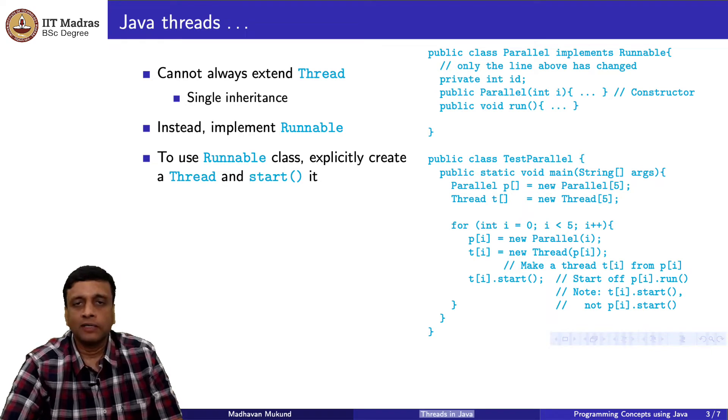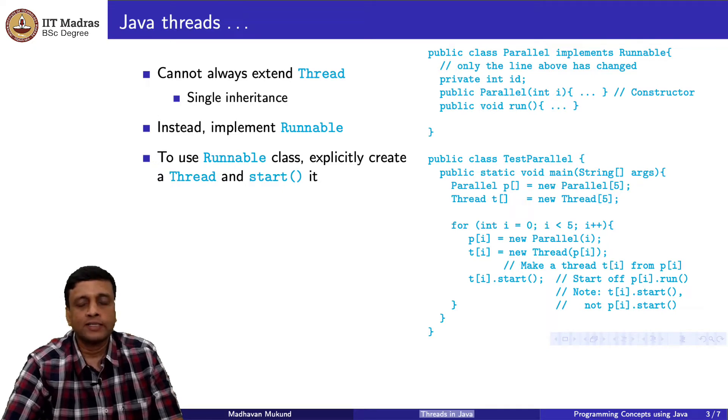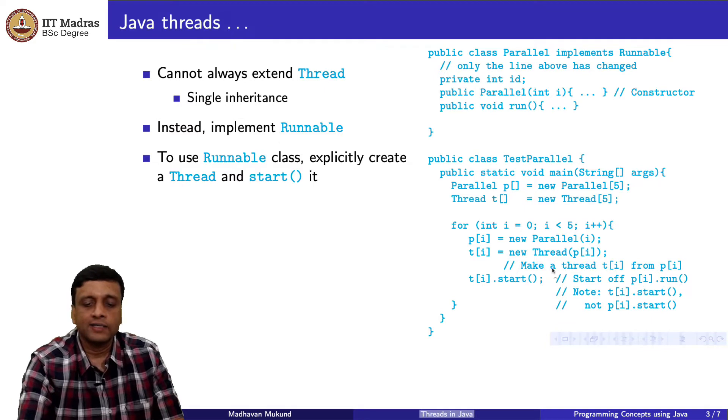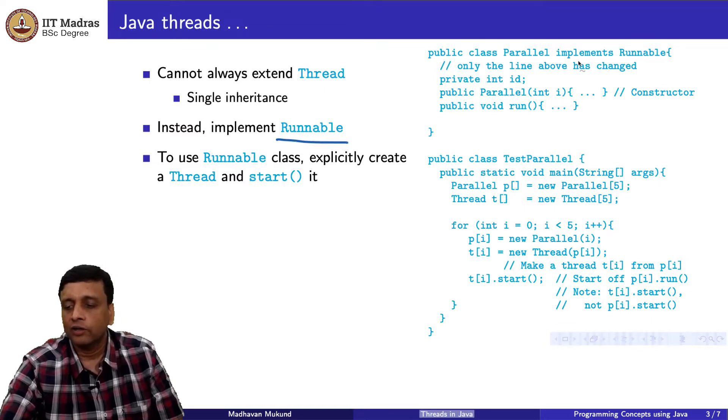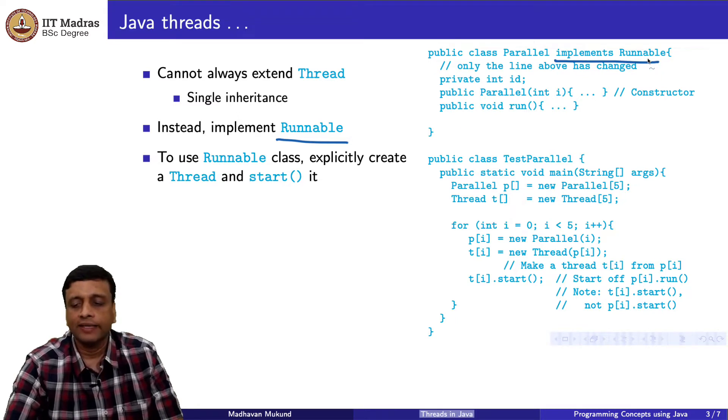We also said that because of this single inheritance problem, it is not enough to just have one class Thread that you can extend. We have to allow something more flexible. Java has a Runnable interface which has the same behavior. You define your class by implementing Runnable instead of extending Thread and everything else is the same. You have to override this function run.